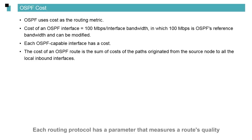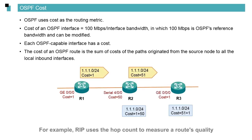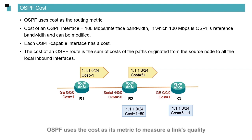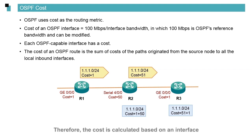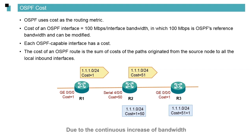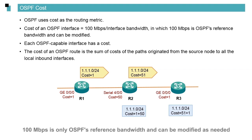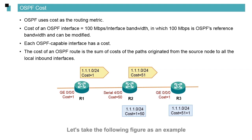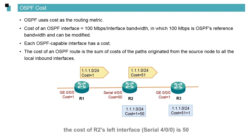Each routing protocol has a parameter that measures a route's quality, which we call metric. For example, RIP uses the hop count to measure a route's quality. However, when there are only a few routers with low bandwidth, RIP's measurement is not reliable. OSPF uses cost as its metric to measure a link's quality. OSPF is an interface-sensitive protocol, so the cost is calculated based on an interface. It is calculated as 100 Mbps divided by interface bandwidth. Due to the continuous increase of bandwidth, 100 Mbps is only OSPF's reference bandwidth and can be modified as needed. For example, the cost of R1's left interface GE 0/0/0 is 1, and the cost of R2's left interface Serial 4/0/0 is 50.